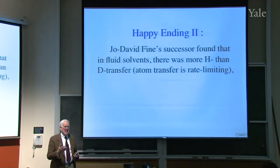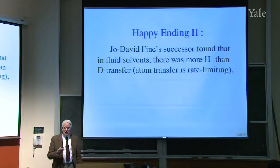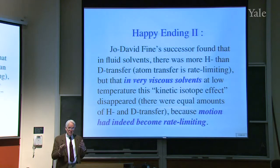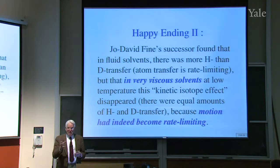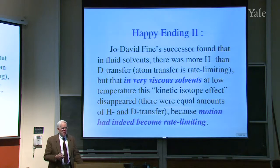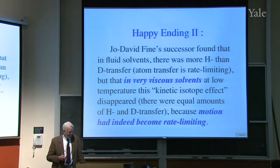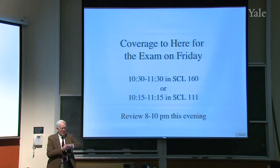There's a second happy ending that Joe David Fine's successor the next year, when we actually had the compound, was able to make it, test it, and find out that if you have a fluid solvent, there's an isotope effect. Hydrogen is transferred more than deuterium. The atom transfer is rate limiting. But in a very viscous solvent at low temperature, the kinetic isotope effect disappeared. It was 50-50 hydrogen to deuterium transfer because motion had become rate limiting. So it is possible for very subtle motion to be the rate limiting step. So there were two happy endings. Joe David learned a valuable lesson. And I learned something both from Joe David and from Steve Nelson and from this result.